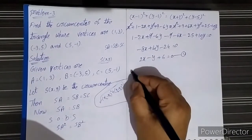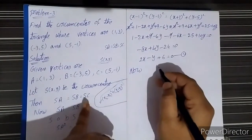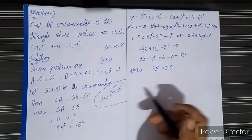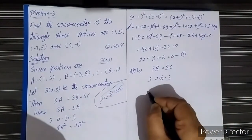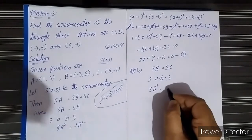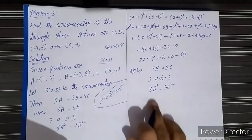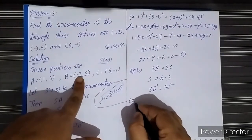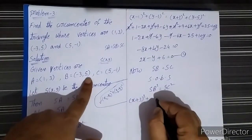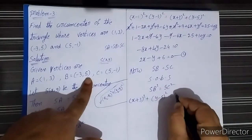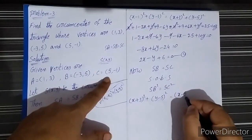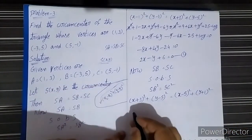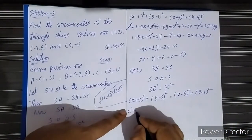Now we use SB equal to SC. We equate these two and square both sides: SB² = SC². Substituting the values: (x + 3)² + (y - 5)² = (x - 5)² + (y + 1)².